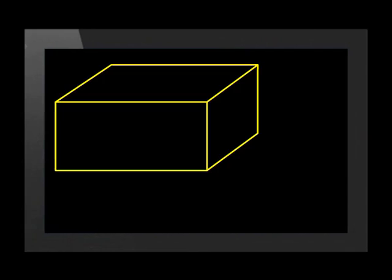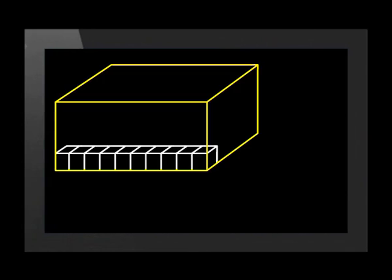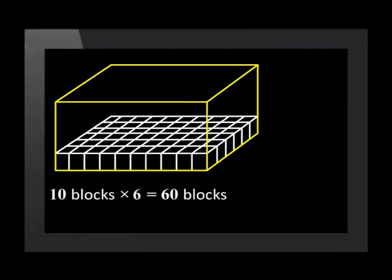Now we would take our little one centimetre cubic blocks and begin packing them into the box. The question is, how many of these blocks will we need? Since the box is ten centimetres long, we would pack ten blocks along the length of the box. Because the box is six centimetres wide, we can fit six rows of ten blocks on the bottom of the box. That would make sixty blocks in all to cover the bottom of the box.